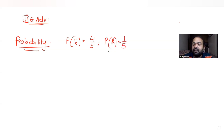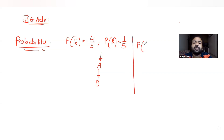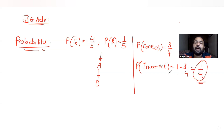The probability of the signal being red is 1 by 5. This signal is received first by station A, and then station A transmits that same signal to station B. The probability of the signal being received correctly by the station is 3 by 4, so the probability of an incorrect signal received by the station is 1 by 4.